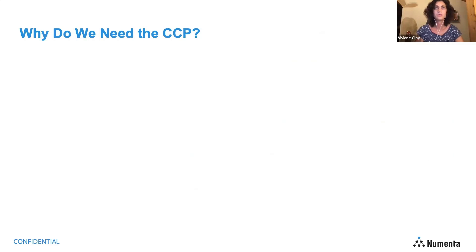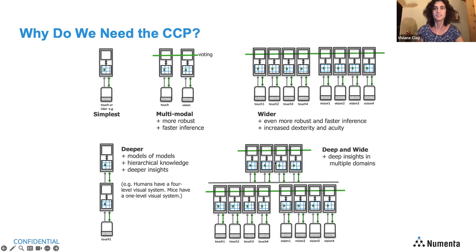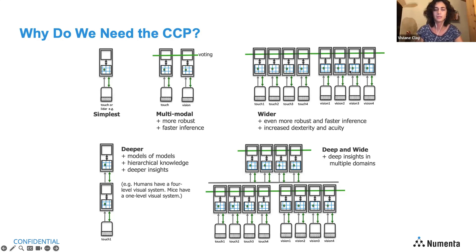Why do we need the CCP? This figure nicely illustrates how we want Monty to be a really flexible system where we can just plug and play individual components. We want to have as many learning modules from potentially different modalities interacting with each other, be able to stack them to create a deeper hierarchy, and have the possibility for parallelism — and that's really only possible if they all have the same interface so we can combine them into arbitrary architectures.